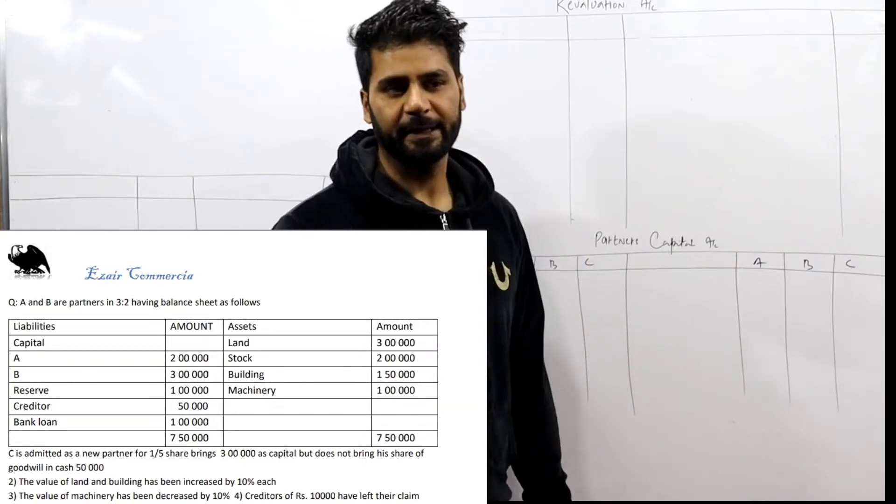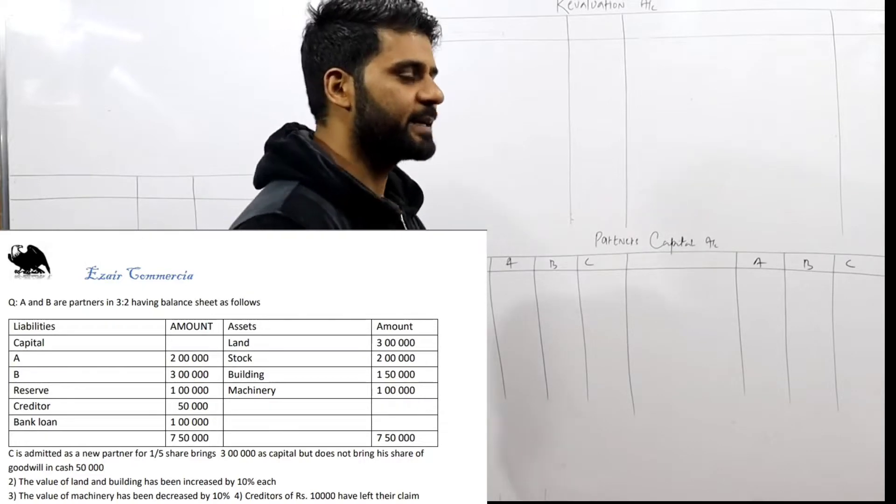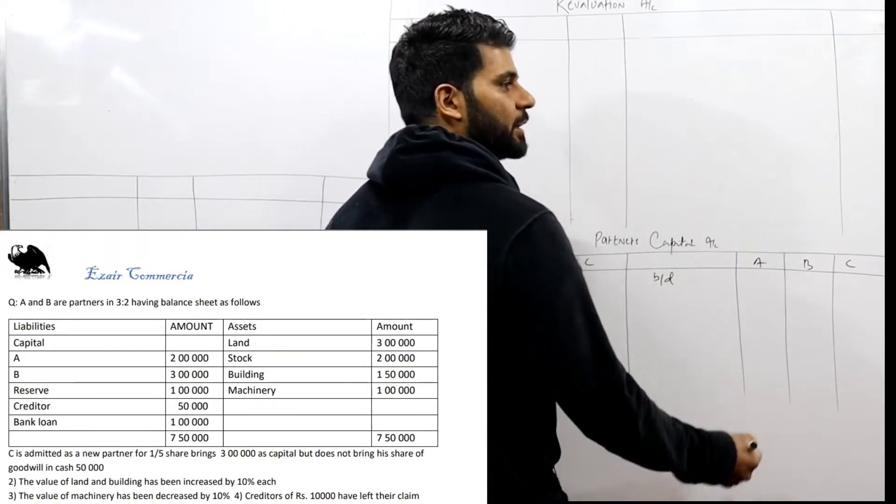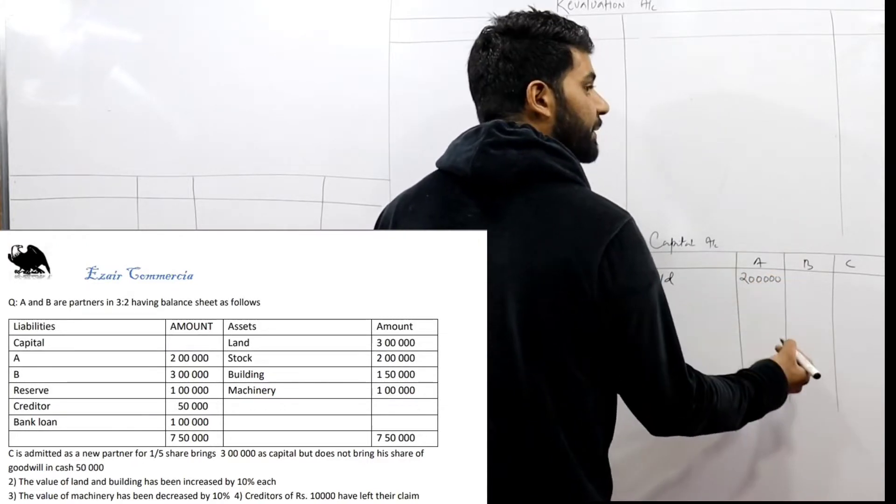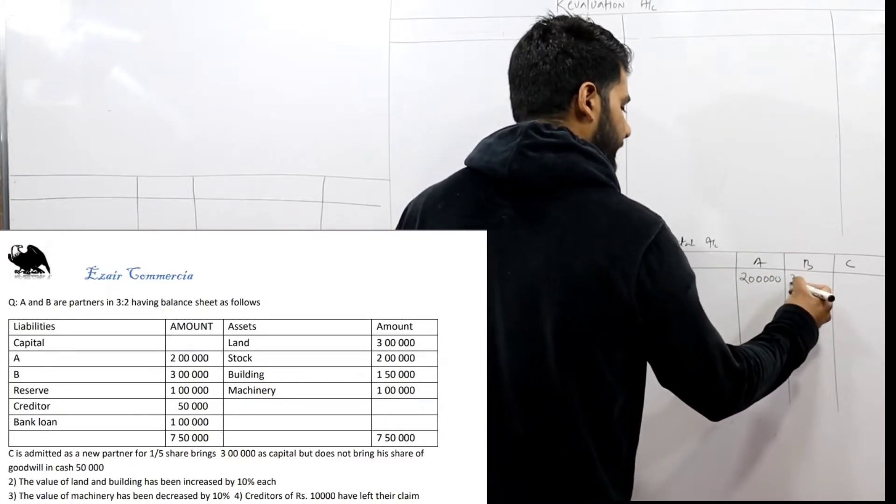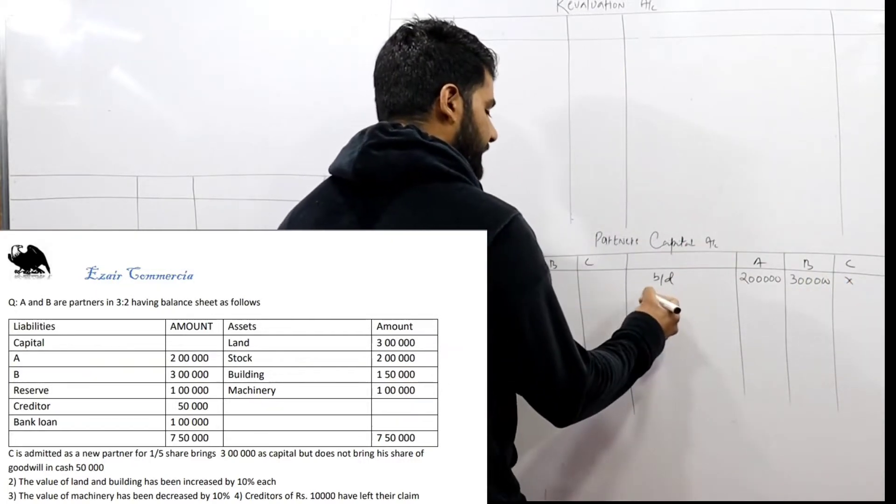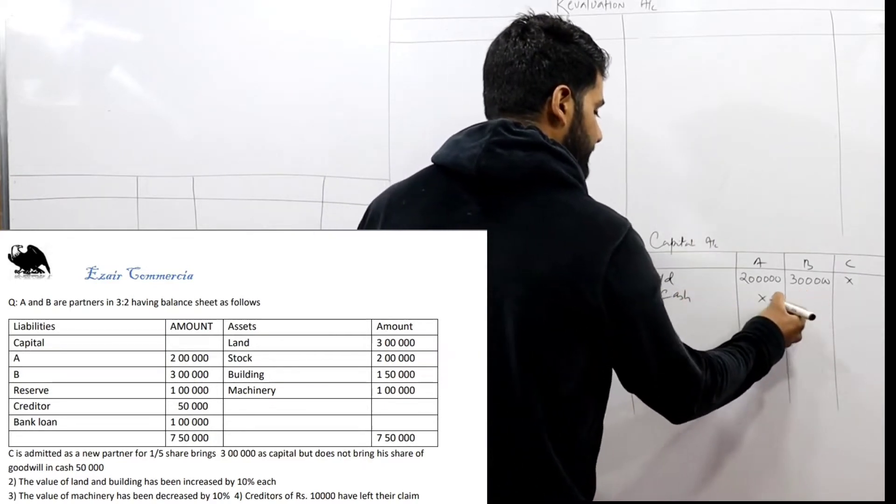If we make capital account, first we take the opening balance. Capital A is 2 lakh, and B is 3 lakh. C has none. After that, C brings cash 3 lakh as capital. How much does C bring?